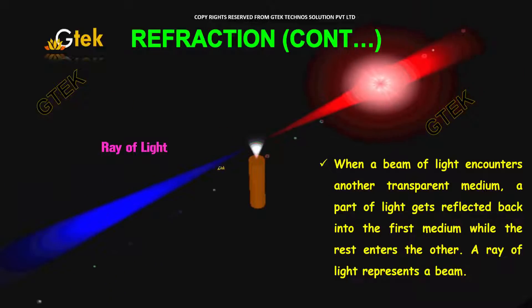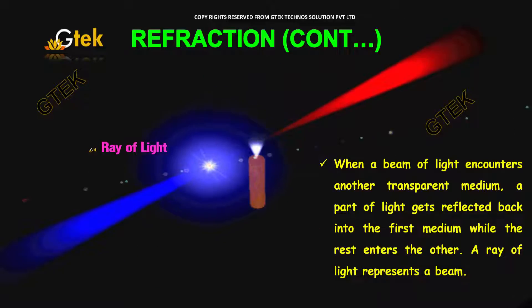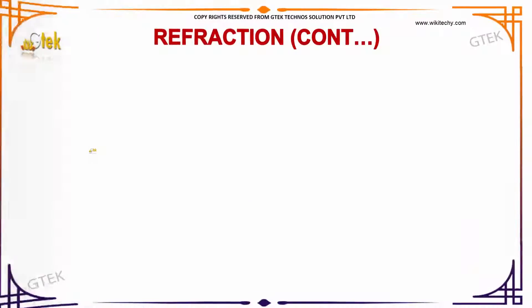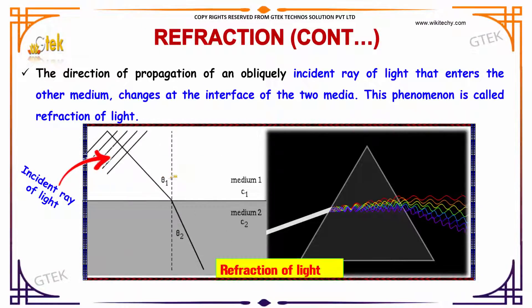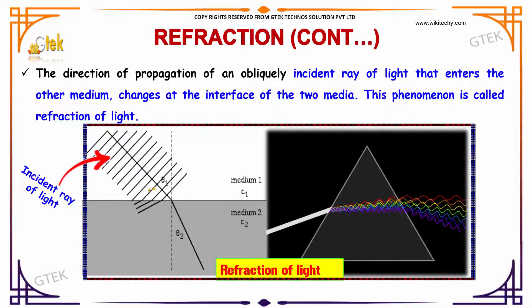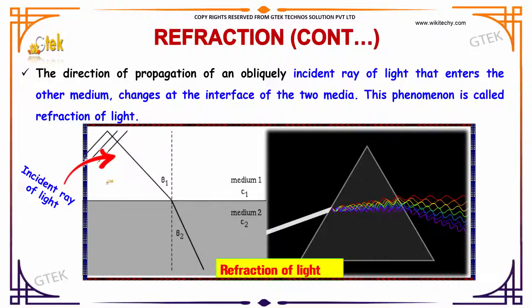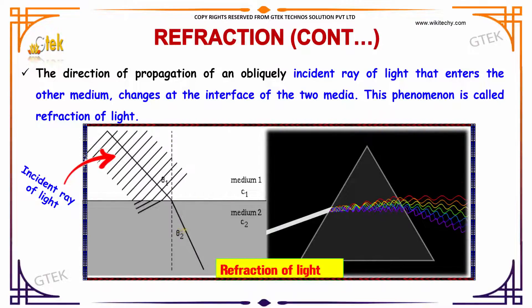A ray of light represents a beam. You can see the reflection here. The direction of propagation of an obliquely incident ray of light that enters the other medium changes at the interface of the two media. This phenomenon is called refraction of light.